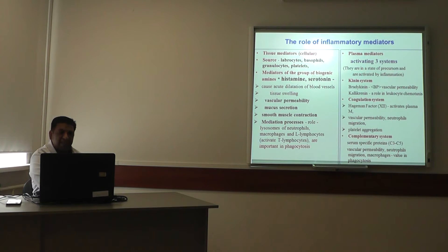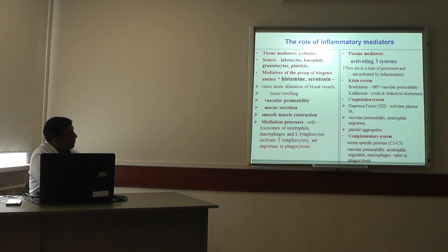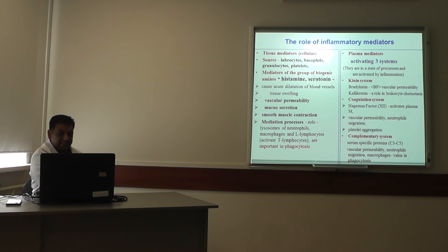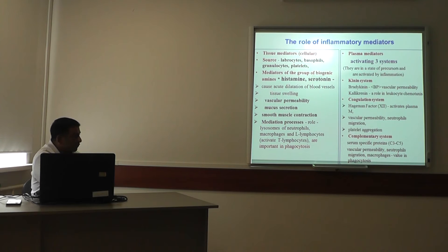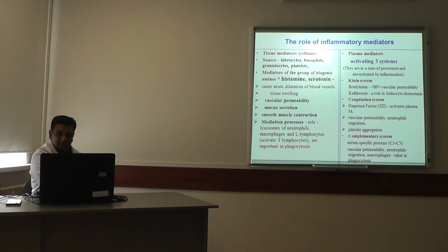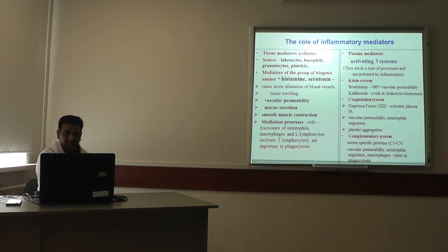The role of inflammatory mediators: there are two types — tissue mediators (also called cellular) and plasma mediators. For tissue mediators, the sources are mast cells, basophils, granulocytes, and platelets. The group of biogenic amines includes histamine and serotonin, which cause acute dilation of blood vessels and tissue swelling, increased vascular permeability, mucus secretion, and smooth muscle contraction. Mediators also involve lysosomes of neutrophils, macrophages, and lymphocytes, and they activate T lymphocytes, which is important in phagocytosis.